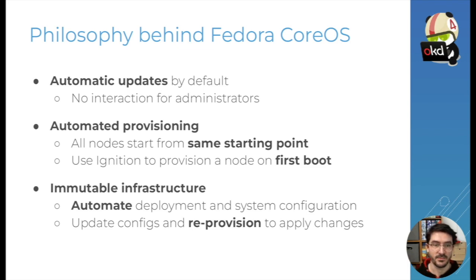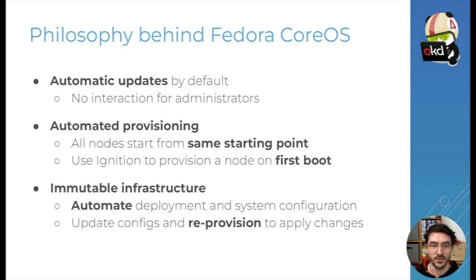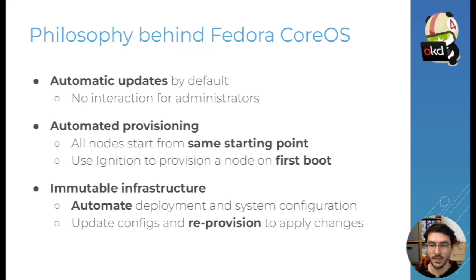The second pillar is automated provisioning — every single node that you install as part of your cluster, every single instance of Fedora CoreOS, starts from the same point, and then you use Ignition to provision and configure it on first boot. These elements enable you to do what we call immutable infrastructure, so you can automate the deployment and system configuration of your entire fleet. If you want to change a config file or reset up another instance of your cluster, you can update your configuration and re-provision your nodes to apply changes.